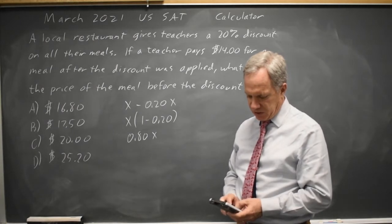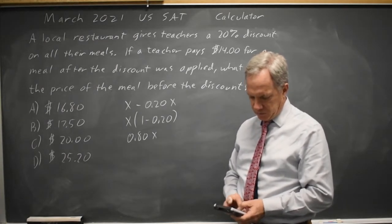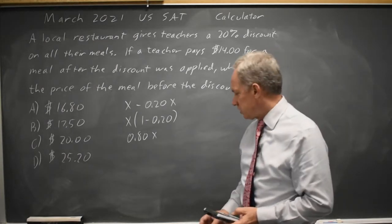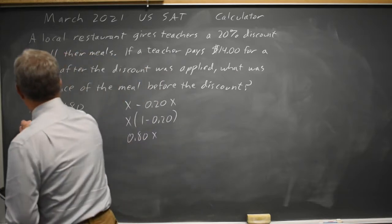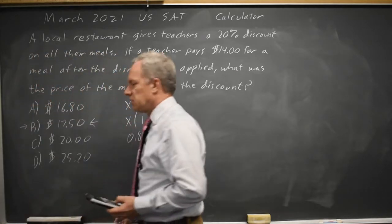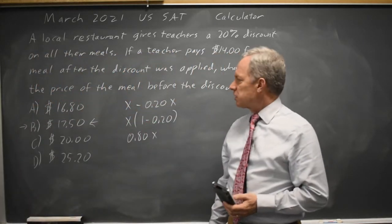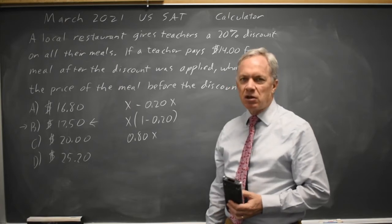For $17.50 times 0.8, I get exactly $14, so the answer is $17.50. And if I try the others, I will not get $14, of course.